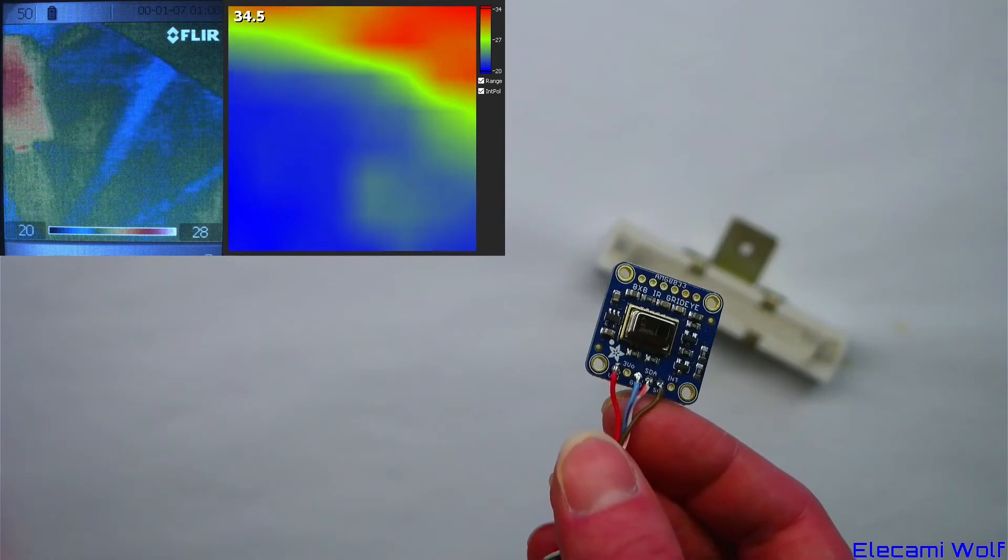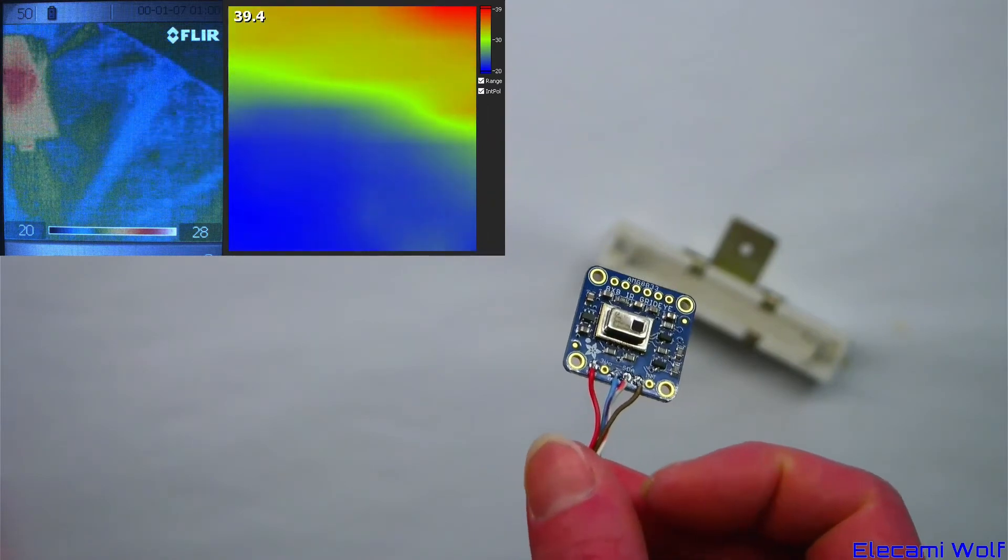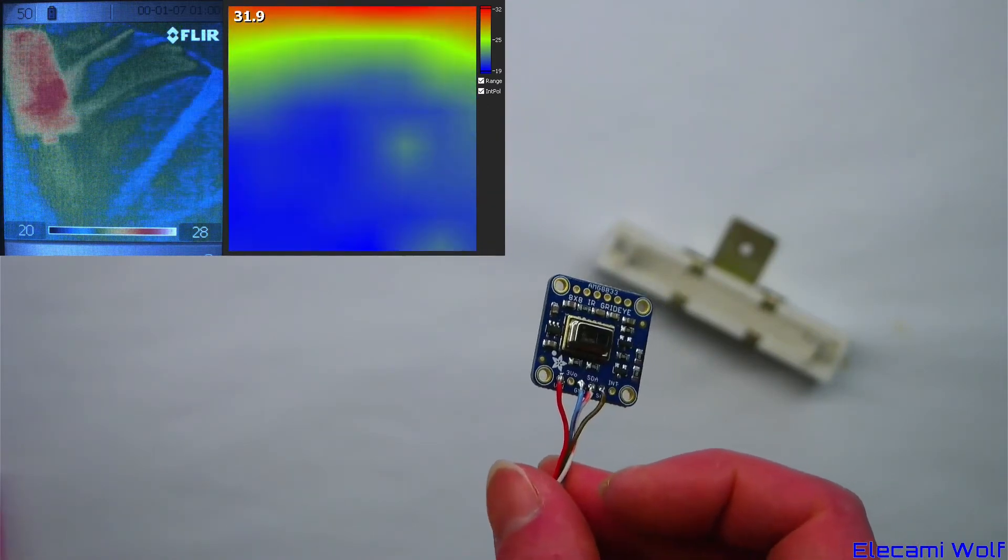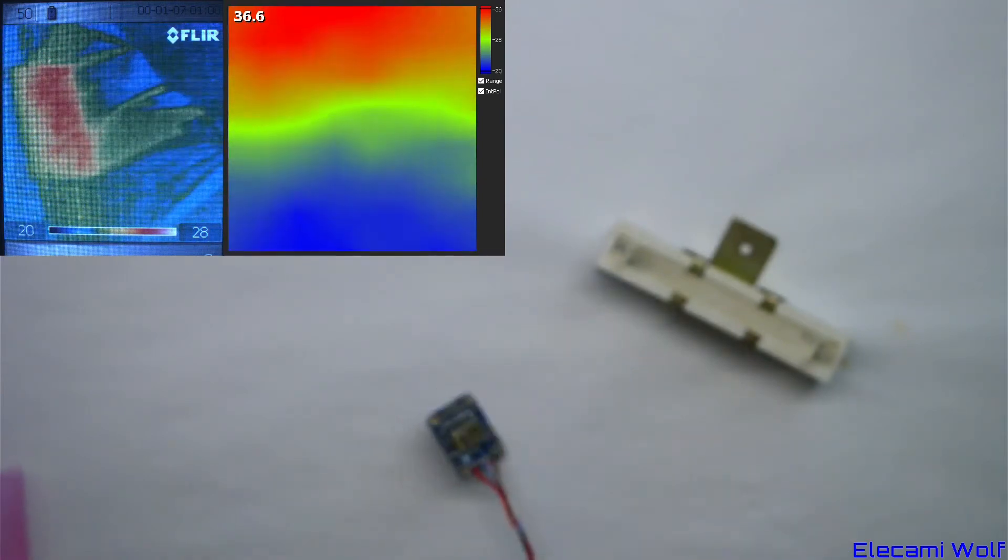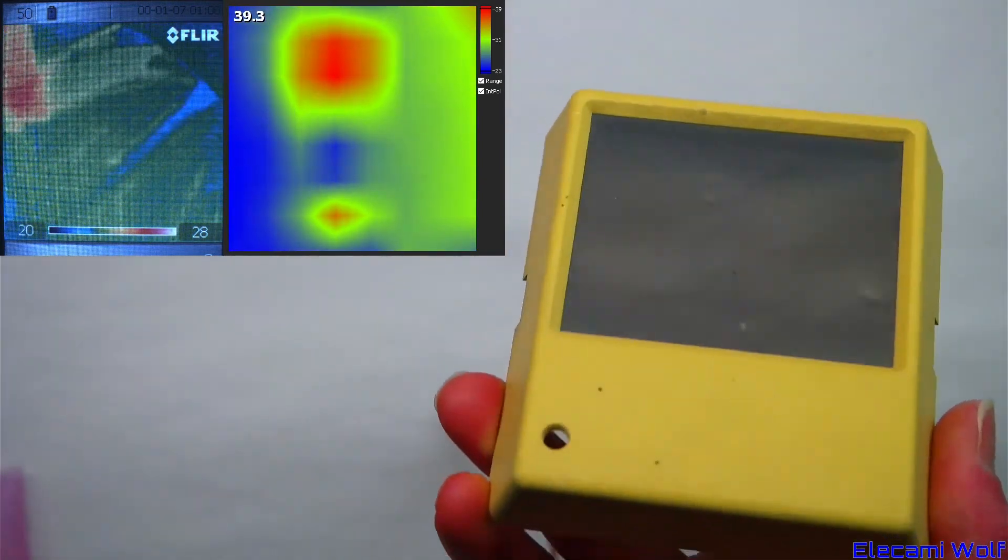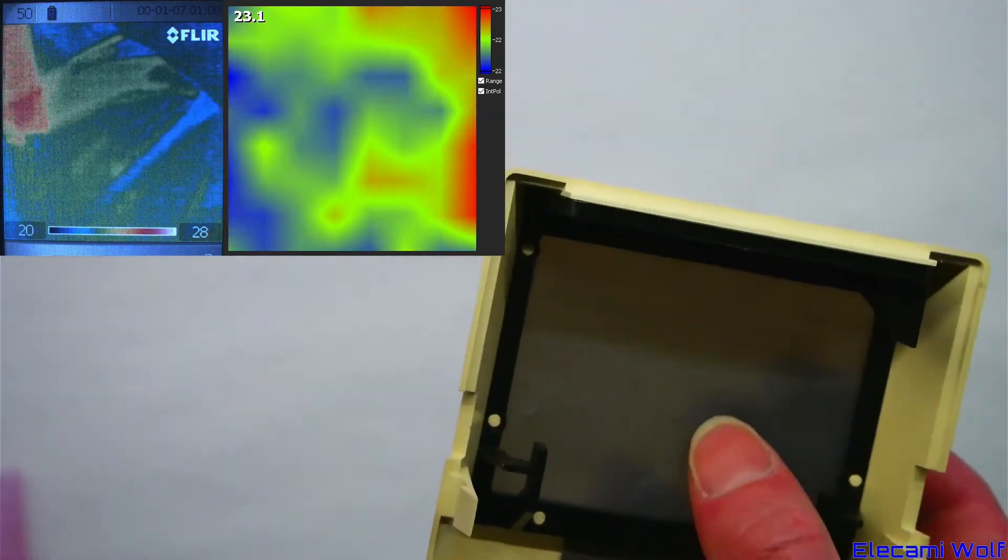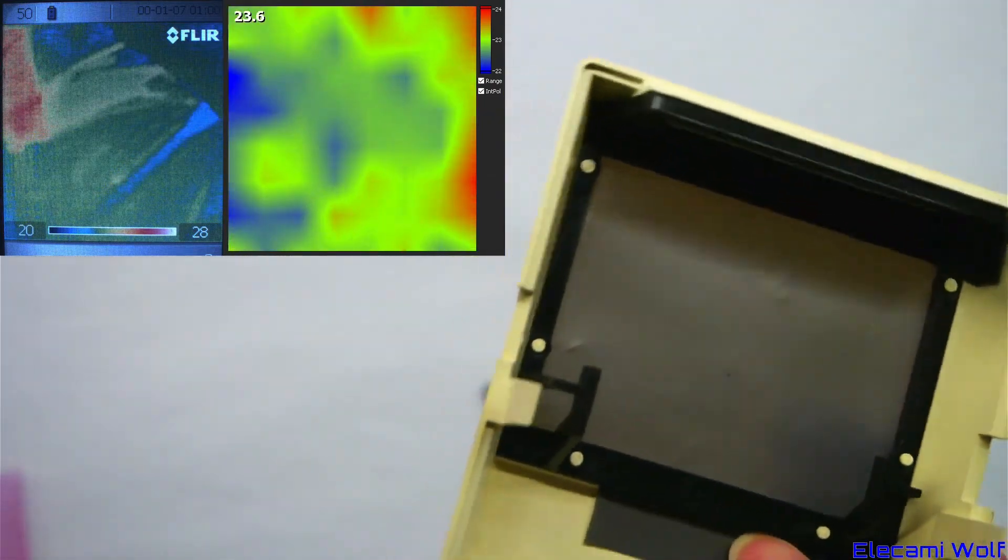The GridEye sensor is quite vulnerable to dirt and dust. Is it possible to protect it without adversely affecting the thermal measurement? I have a cover from a very old PIR sensor. This material should be able to pass the infrared.